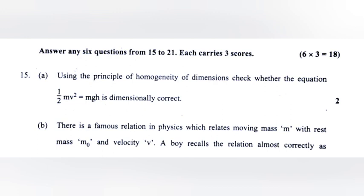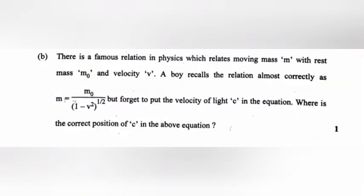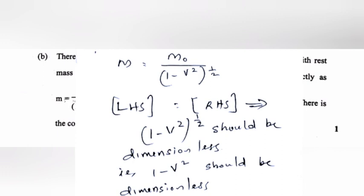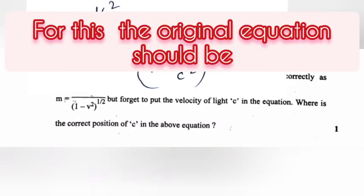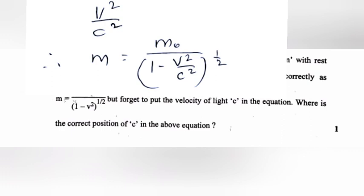Question 15B: There is a famous relation in physics which relates moving mass m with rest mass m0 and velocity v. A boy recalls the relation almost correctly as m is equal to m0 by 1 minus v square the whole raised to 1 by 2, but forgot to put the velocity of light. Where is the correct position of c in the above equation? Answer: LHS equals RHS implies 1 minus v square the whole raised to 1 by 2 should be dimensionless. For this, the original equation should be v square by c square. Therefore, m is equal to m0 by 1 minus v square by c square the whole raised to 1 by 2.